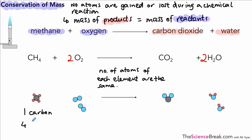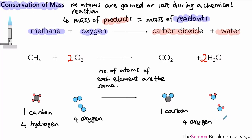We have one carbon atom and four hydrogen atoms in methane, and four oxygen atoms reacting with it. That gives us one molecule of carbon dioxide — one carbon and two oxygens — plus two molecules of water giving four hydrogens and two more oxygens. So we have four hydrogens on each side, one carbon on each side, and four oxygen atoms on each side.